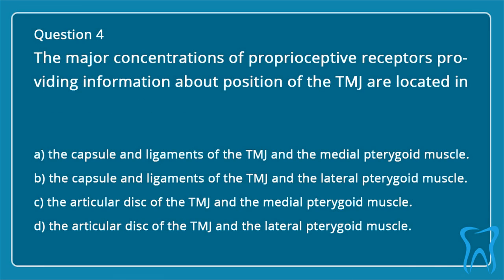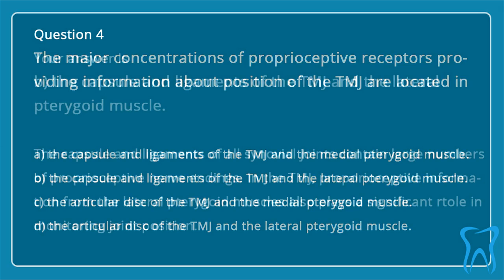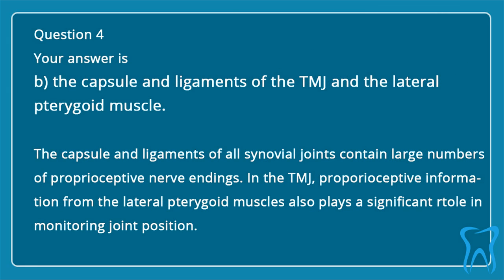Question 4. The major concentrations of proprioceptive receptors providing information about position of the TMJ are located in: a. The capsule and ligaments of the TMJ and the medial pterygoid muscle. b. The capsule and ligaments of the TMJ and the lateral pterygoid muscle. c. The articular disc of the TMJ and the medial pterygoid muscle. d. The articular disc of the TMJ and the lateral pterygoid muscle. Correct answer B: The capsule and ligaments of the TMJ and the lateral pterygoid muscle. The capsule and ligaments of all synovial joints contain large numbers of proprioceptive nerve endings. In the TMJ, proprioceptive information from the lateral pterygoid muscles also plays a significant role in monitoring joint position.